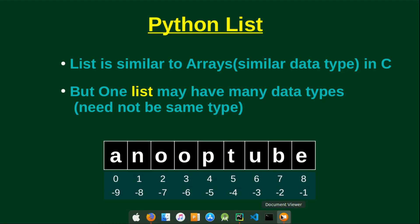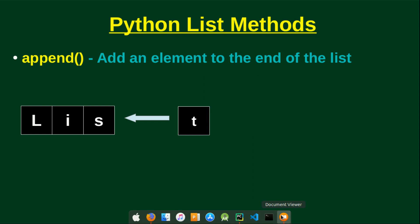Now we will see the negative indexing. Next is Python methods. We have already listed this as Python List. We will use some functions. This is the inbuilt file. We will see the append method.